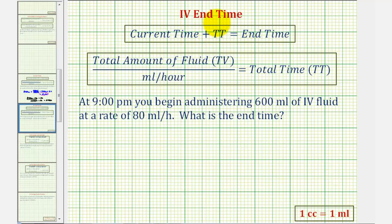An IV end time can be found by starting with the current time and adding the total time the IV will run, where the total time is equal to the total amount of fluid in milliliters divided by the flow rate in milliliters per hour.